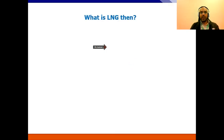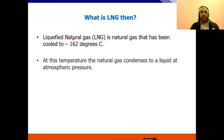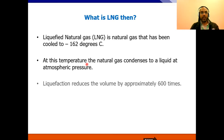So what is LNG? LNG is liquefied natural gas. The natural gas is liquefied — or cooled — up to minus 162 degrees Celsius. At this temperature, the natural gas condenses to the liquid state at almost atmospheric pressure. We liquefy it by reducing the temperature. Liquefaction reduces the volume of the natural gas by approximately 600 times.